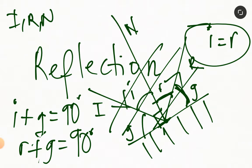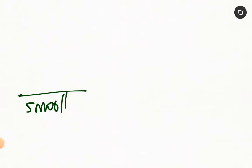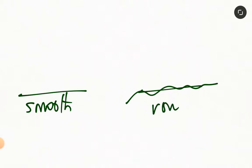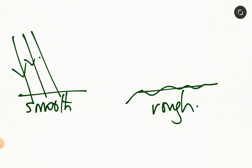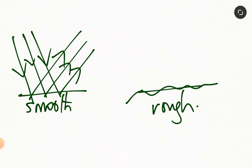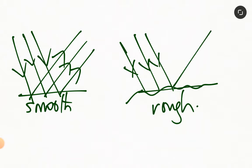We went ahead to discuss the two types of reflection. We said we have regular reflection, which occurs on a smooth surface, and irregular reflection occurring on a rough surface. In the smooth case, when parallel rays fall on the reflecting surface, the reflected rays also appear parallel. In the rough case, when parallel rays are incident on the surface, the reflected rays are not parallel — they meet at some point, not necessarily the same point.